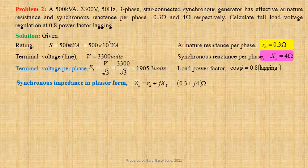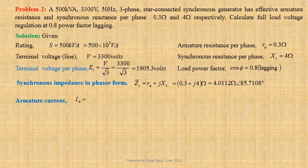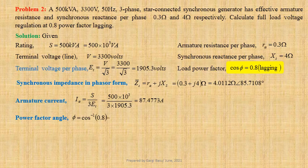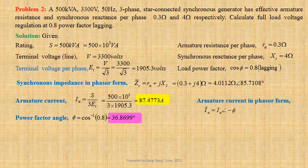This may be written in polar form as 4.0112 ohm at an angle 85.7108 degrees. Let us now determine armature current: Ia equals S divided by 3 times ET. Using values we get 500 × 10³ divided by 3 × 1905.3, giving 87.4773 ampere. Power factor angle φ equals cos inverse of 0.8, that is 36.8699 degrees. Armature current in phasor form: Ia equals 87.4773 ampere at an angle minus 36.8699 degrees.